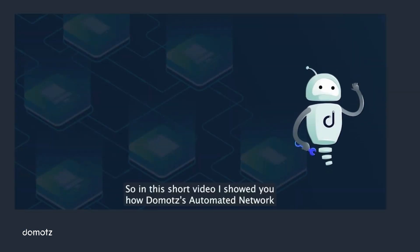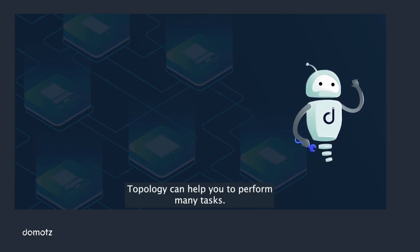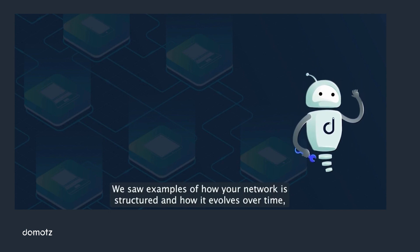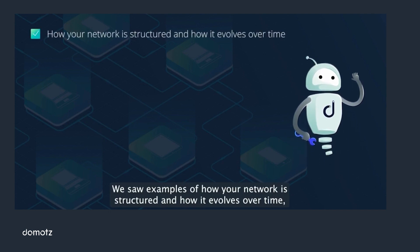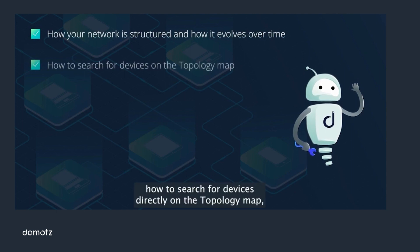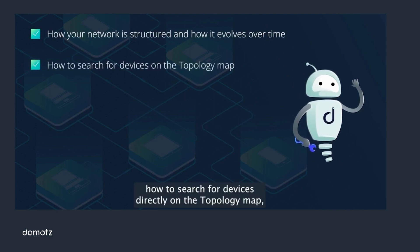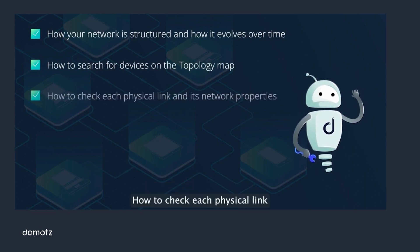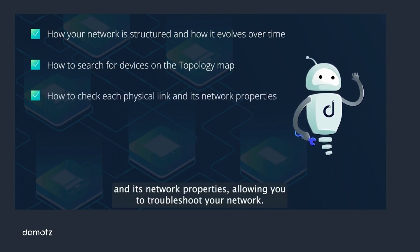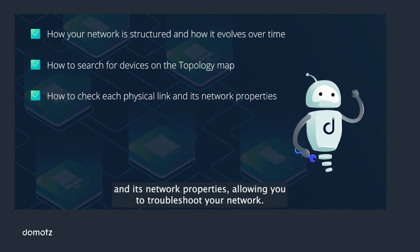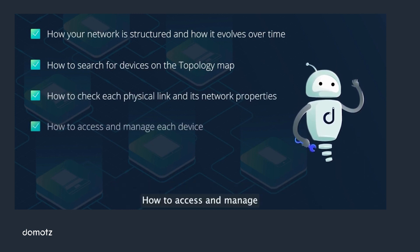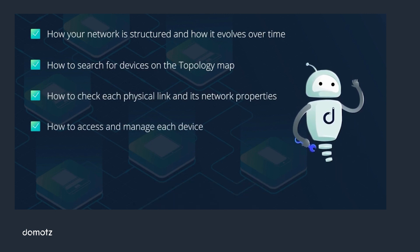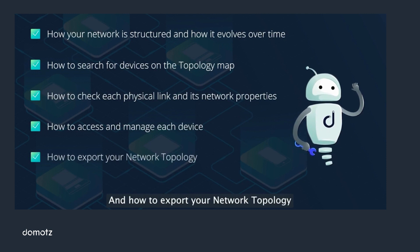In this short video I showed you how Domotes automated network topology can help to perform many tasks. We saw examples of how your network is structured and how it evolves over time, how to search for your devices directly on the topology map and see where they are located, how to check each physical link and its network properties to troubleshoot your network, how to access and manage each device directly from your network topology map, and how to export your topology map in many formats.